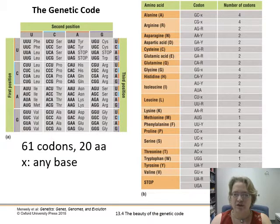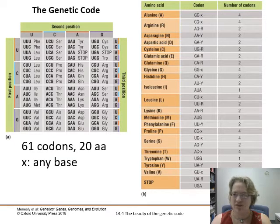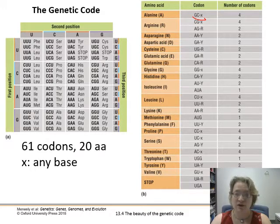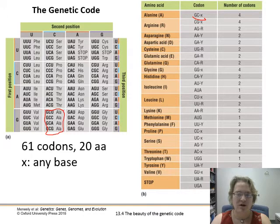Over here on the right, we can see that there is kind of a method to this madness. Like alanine — it says GCX, meaning any base could come after the G and C and it would still code for alanine. So let's find that GC on the chart — here they are. There are all four options that would code for alanine.